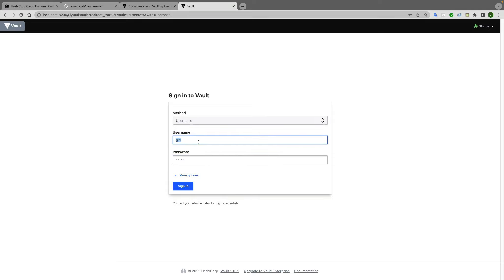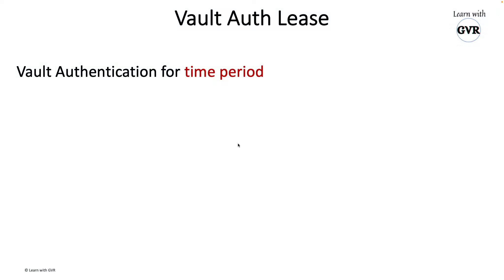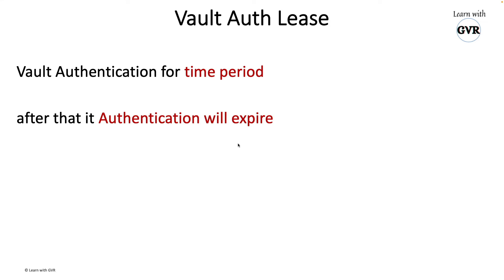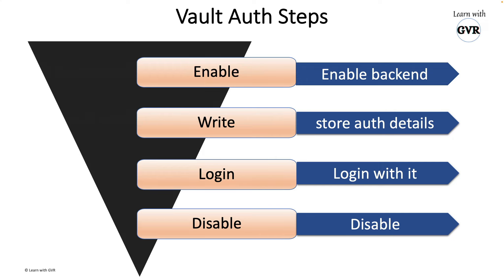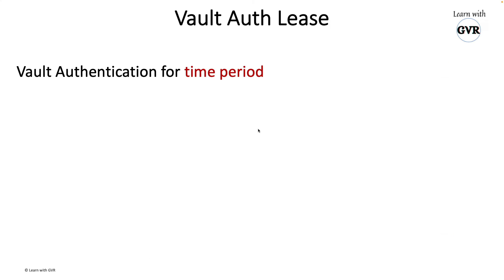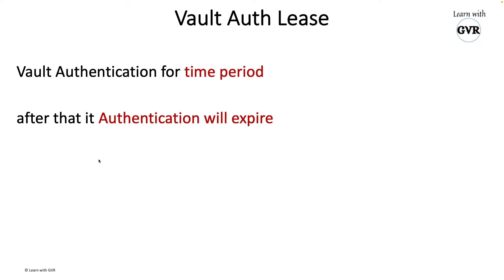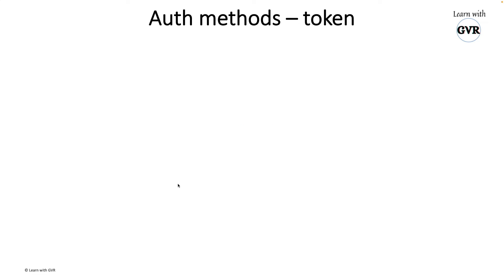You can use username/password, LDAP, or any kind of authentication method for a certain period of time. For example, the user 'gvr' with password '12345' - this password can be configured for one year or six months as a lease. Whenever you enable an authentication method, you get a lease ID. That lease ID can be manually or force-expired. That's Vault's lease functionality.